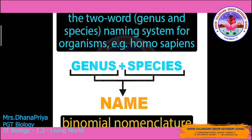We use binomial nomenclature because scientific names are more informative compared to common names. Every recognized species on Earth is given a two-part scientific name. This system allows people throughout the world to communicate about animal and plant species using a universal naming standard.